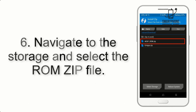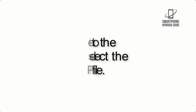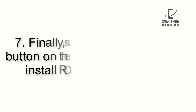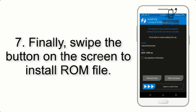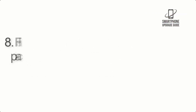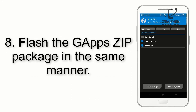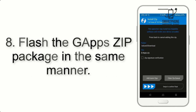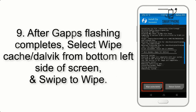Step 6: Navigate to the storage and select the ROM zip file. Step 7: Swipe the button on the screen to install the ROM file. Step 8: Flash the GApps zip package in the same manner.